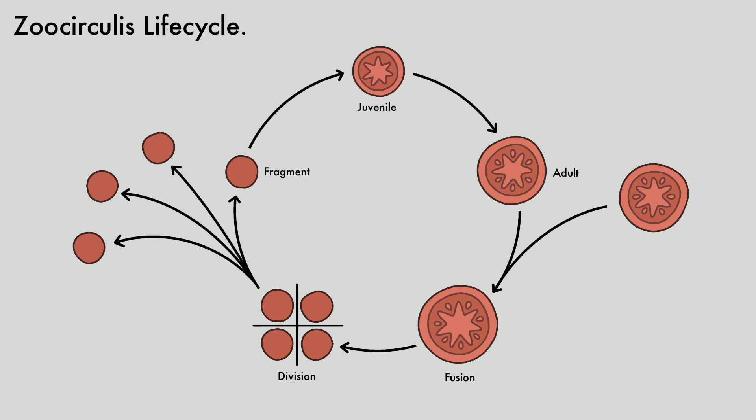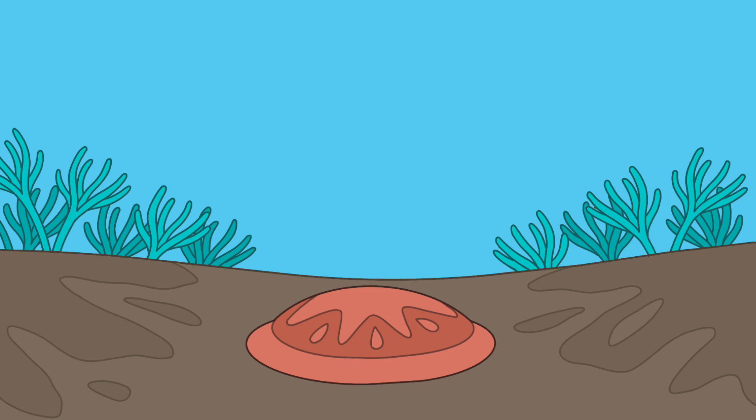This new organism will then split into four to six fragments, and each fragment will grow into an adult organism for the cycle of life to repeat. Because of this, Zoocirculids could theoretically live forever.